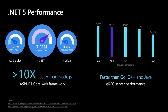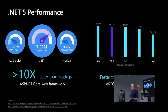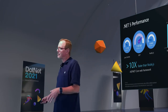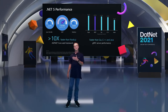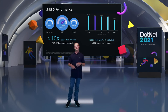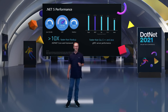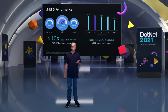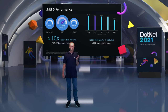gRPC is some exciting tech we shipped in .NET Core 3.0. It's an RPC technology, very similar to WCF (Windows Communication Foundation), except unlike WCF which is more .NET-specific, gRPC is totally cross-platform. You can build a server in Java and call it from .NET, or build a server in .NET and call it from Java. We're also faster than Java, faster than C++, faster than Go — and this is from an independent benchmark. We think we might be faster than Rust as well.